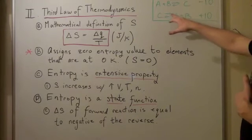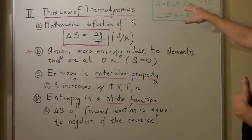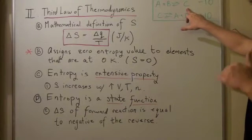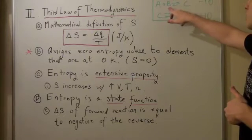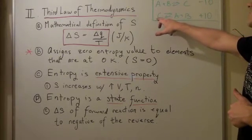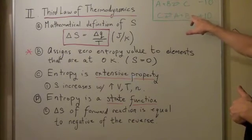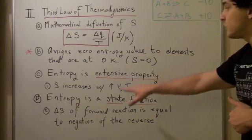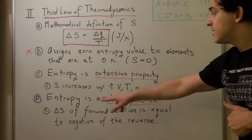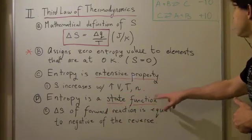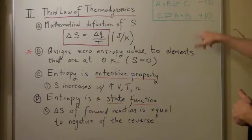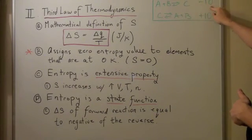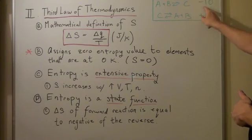If we look at the reaction here, A plus B forms C, we go from two molecules to one molecule, so entropy decreases. The reverse reaction would mean we go from C to A plus B, from one molecule to two molecules. Because entropy is a state function, the reverse reaction is the negative of the forward reaction. So negative times negative 10, or negative 1 times negative 10, is positive 10.